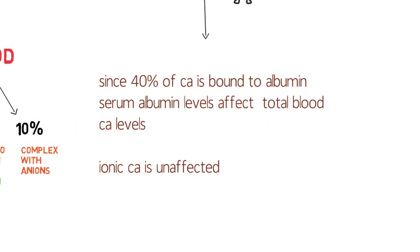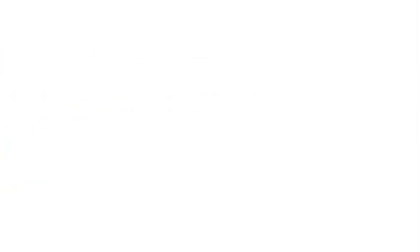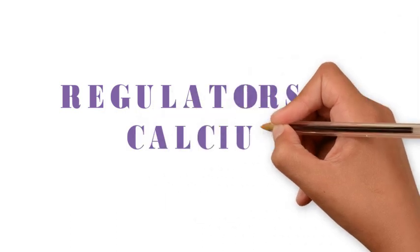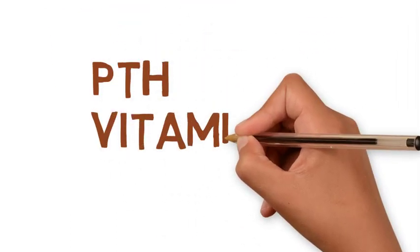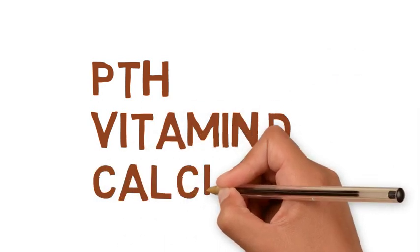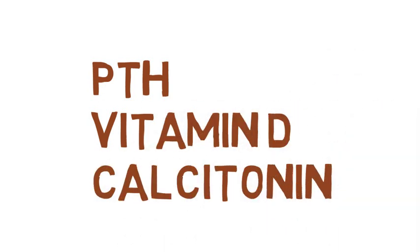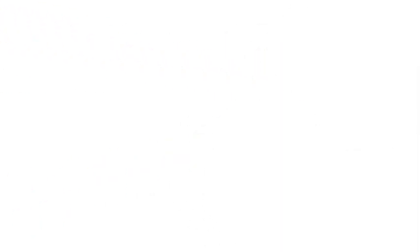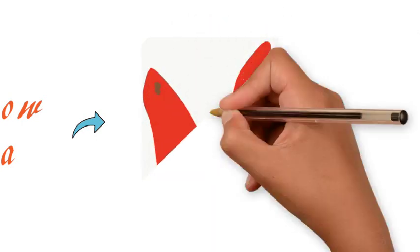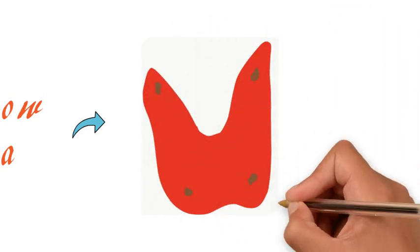Let's see regulators of calcium. There are three regulators: parathyroid hormone, vitamin D, and calcitonin. What happens when there is low calcium in blood? Then parathyroid glands, those brown ones, secrete parathyroid hormone.